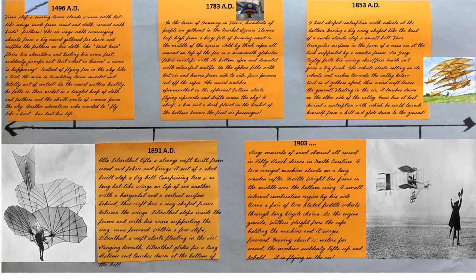1496 A.D. From atop a soaring tower stands a man with bat-like wings made from wood and cloth, covered with birds' feathers. The air rings with encouraging shouts from a big crowd gathered far down, and ruffles the feathers on his cloth. The bird-man flexes his shoulders and, beating his arms fast, suddenly jumps out. But what in heaven's name is happening? Instead of flying free in the sky like a bird, the man is tumbling down, inverted, and totally out of control. As the crowd scatters hastily, he falls in their midst in a tangled heap of cloth and feathers, and the shrill wails of women pierce the sky. Another adventurer, who wanted to fly like a bird, has lost his life.